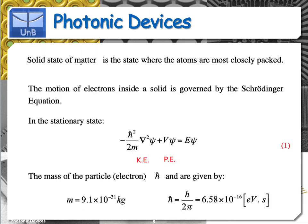Solid state is the state of matter where the atoms are most closely packed. Compared with a liquid or a gas, the atom density in a solid is much larger. When looking into the motion of electrons inside a solid, you need to solve the Schrödinger equation. Essentially, the electron inside the solid is going to behave like a wave. The Schrödinger equation is a wave equation, much like the wave equation that dictates the propagation of light in electrodynamics, which is obtained from Maxwell's equations.